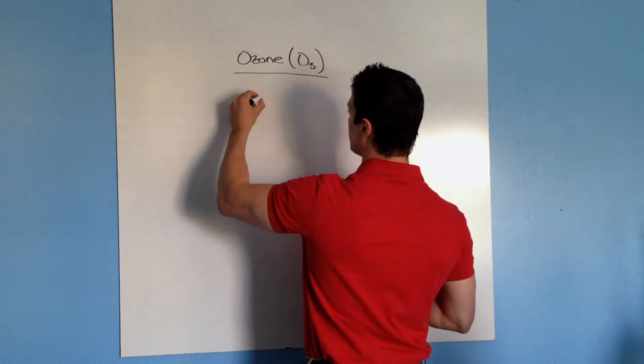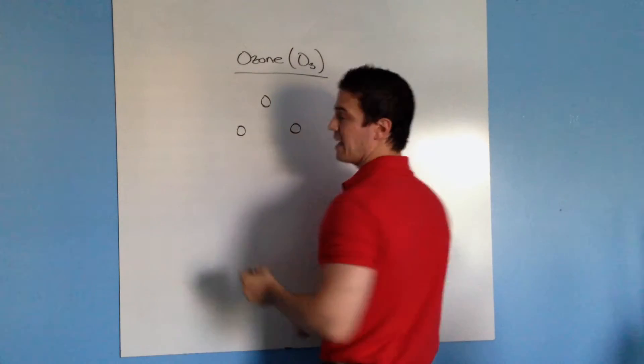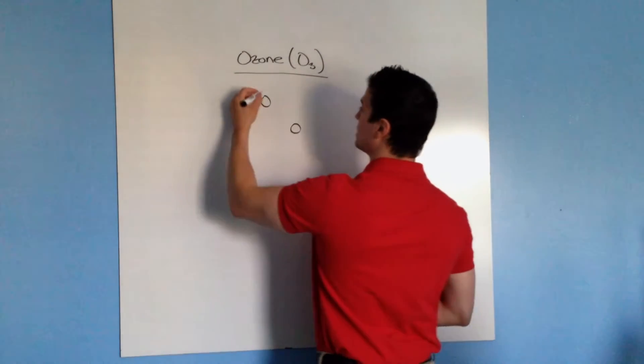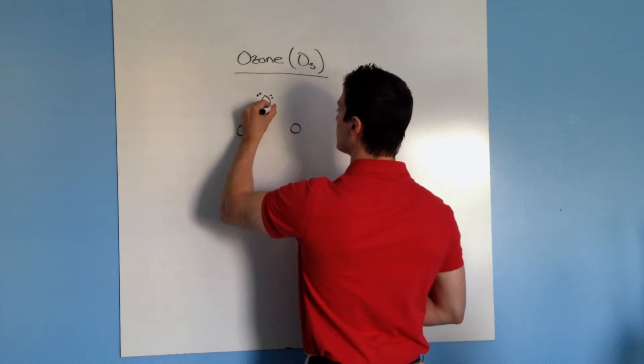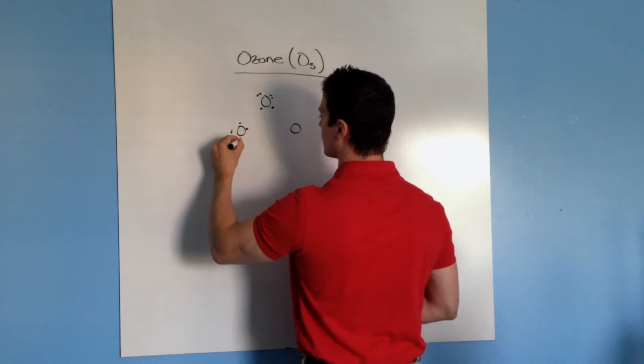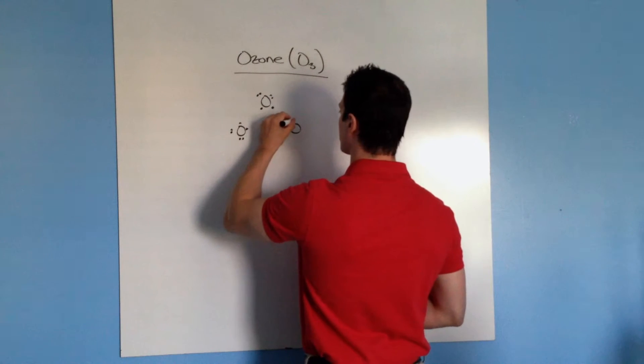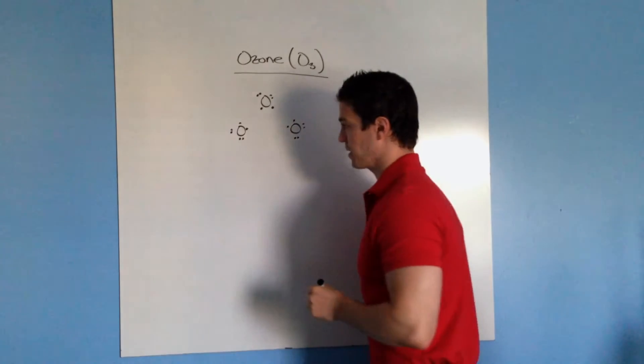So it's O3, so what I'm going to do is draw three O's and they each have six valence electrons, so I'm going to put six dots on each of them.